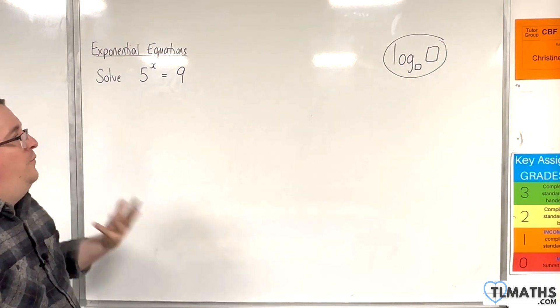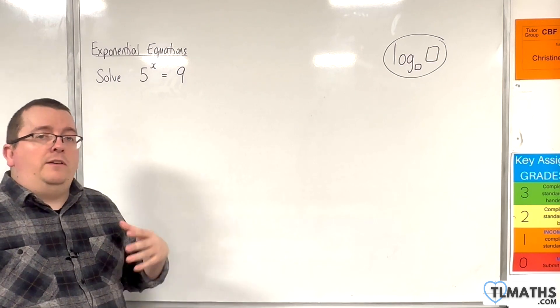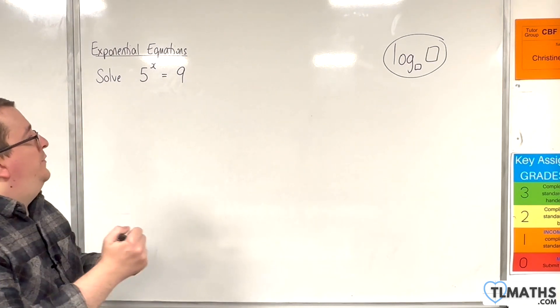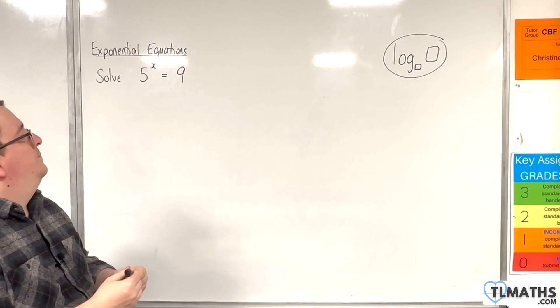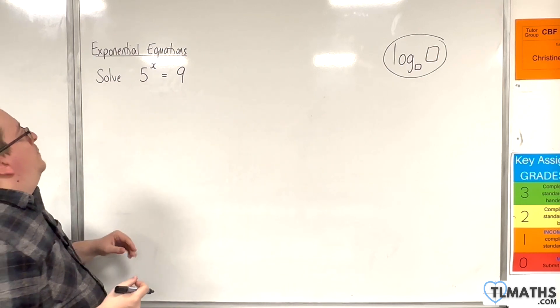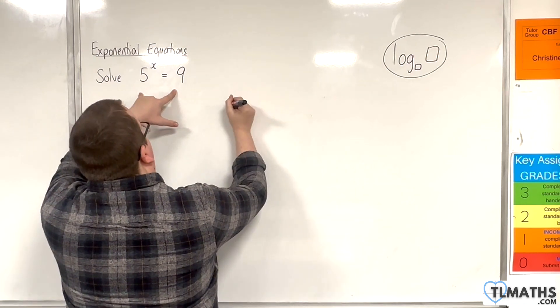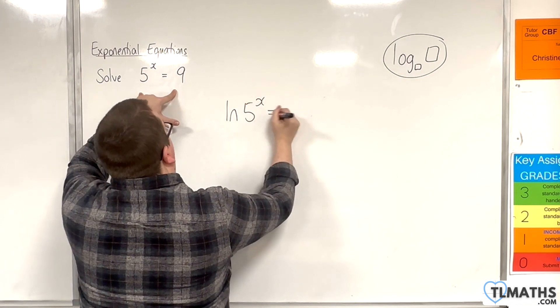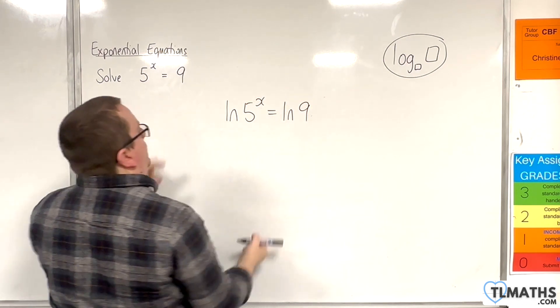So, with these few examples that we're going to look at, I'm going to use natural log to take logs of both sides. So, here, I'm going to take the natural log of the left-hand side, and the natural log of the right-hand side.